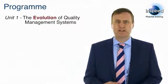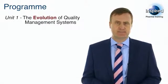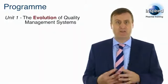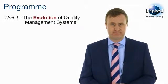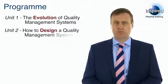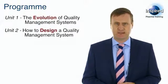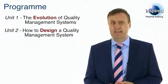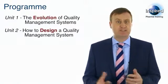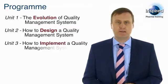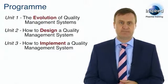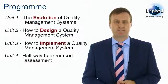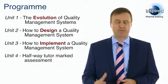In Unit 1, we will cover the evolution of quality management systems, explaining how the notion of quality and QMS thinking has evolved over time. In Unit 2, we will cover how to design a quality management system, establishing the building blocks of a QMS. Once a system has been designed, it needs to be implemented, followed and adhered to. And so, in Unit 3, we will cover how to implement a quality management system. This will then bring us to Unit 4, your halfway tutor-marked assessment, which you will be expected to complete and send to us for marking.